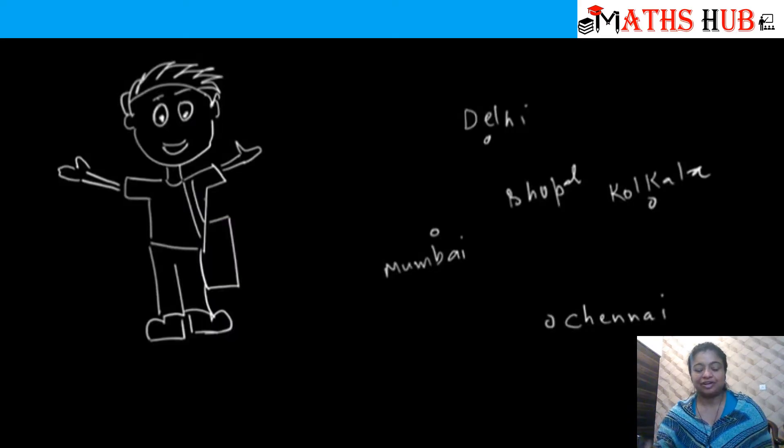Here you can see this is a salesman who needs to travel from all the cities and he needs to come back to the same city so that none of the cities are repeated again.